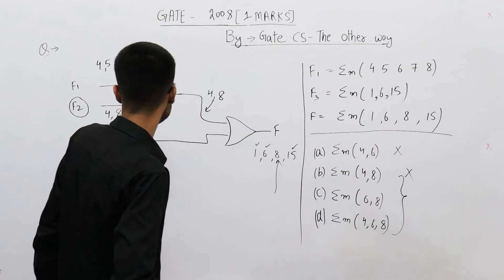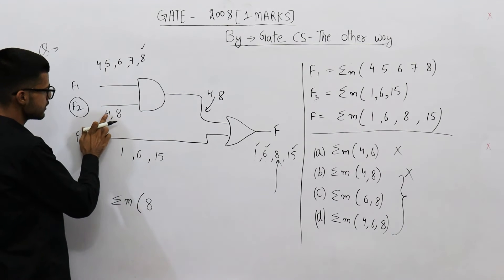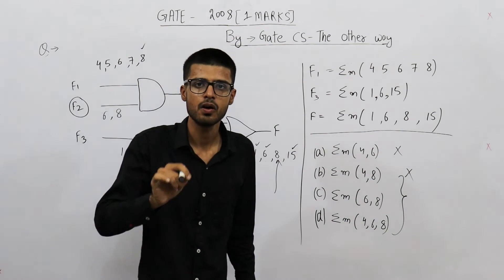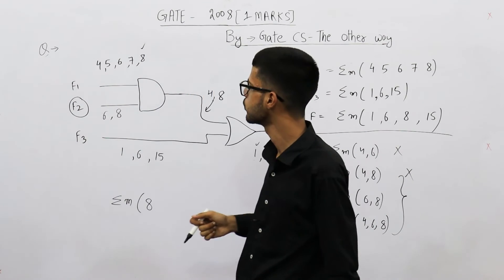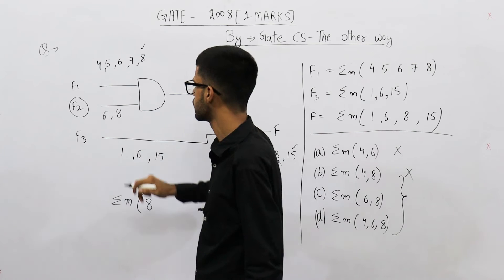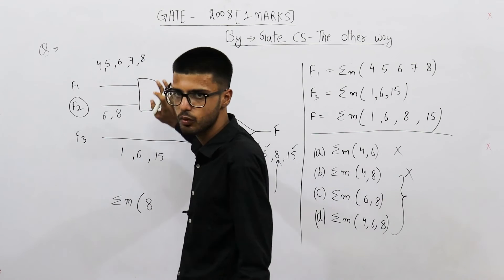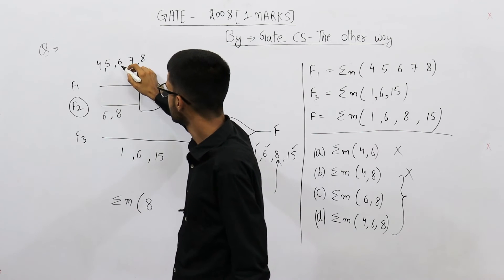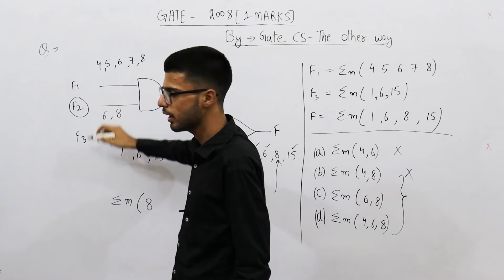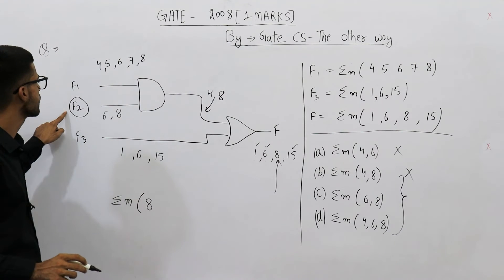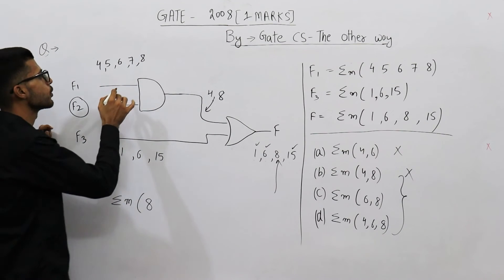Let's analyze option C. Option C says f2 is 6 and 8, that means f2 is high on the input 6 and the input 8. So I've written it here: 6 and 8. Now you see, 8 we require it. That's done. What about 6?